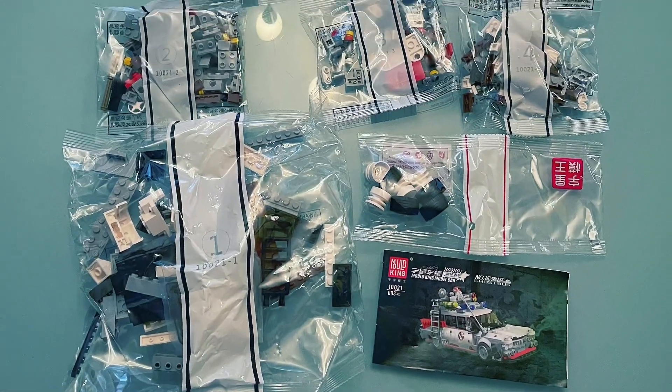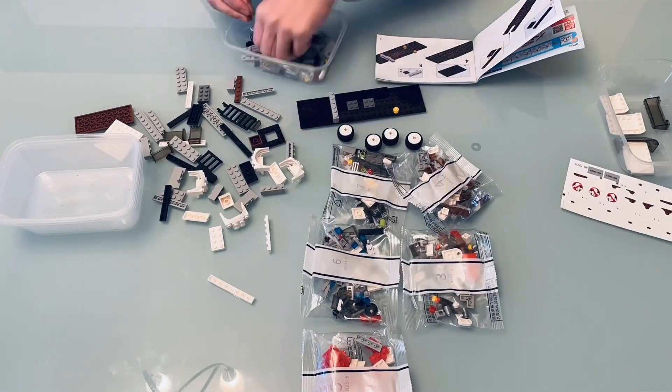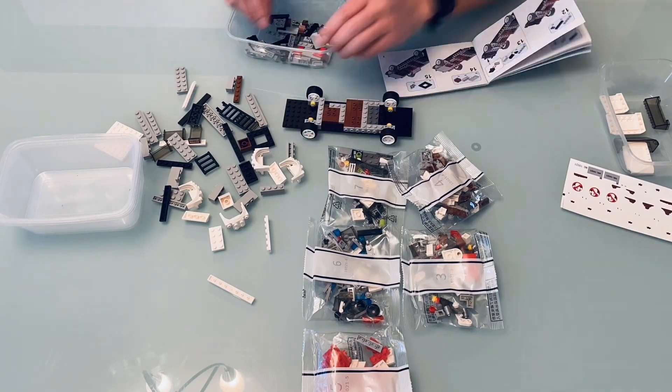It's the Ghostbusters Ecto-1. This set was bought on AliExpress and cost around $30. The delivery took around 2 weeks from China to Canada.